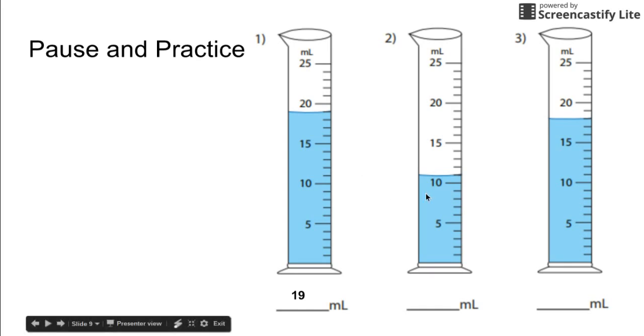Number two. The bottom of the meniscus reads right above the 10 milliliters, one increment above, and that's going to give us a measurement of 11 milliliters. And lastly, the third one should give you a measurement of 18 milliliters: three above the 15, 16, 17, 18. Let's try one more set.